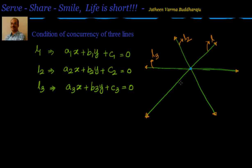Now, how to prove concurrency without any formulas: take two lines, find out their point of intersection, and substitute it in the third line. You should be able to see that the third line satisfies the point of intersection of the first two lines.